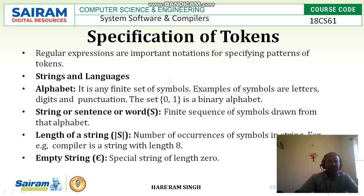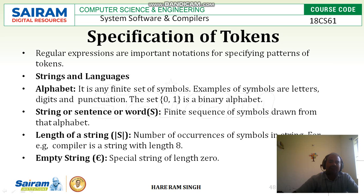Then, string — also called sentence or word. What is that? It is a finite sequence of symbols drawn from that alphabet. Then, what is the length of a string? It is the number of occurrences of symbols in a string. For example, the string 'compiler' has 8 letters, so the length of the string is 8. Another concept is the empty string — it is a special string of length 0.